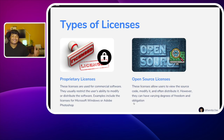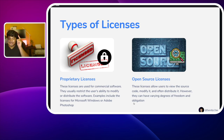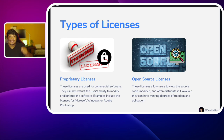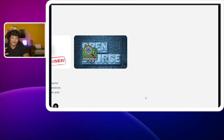Now let's understand the types of these licenses. Practically there are multiple types, but for our use case there are two kinds. The first is the proprietary license — used for commercial purposes only and restricts the user's ability to modify or distribute the software, for example Microsoft Windows or Adobe Photoshop. The second type is the open source license, which allows users to view the source code, modify it, and often distribute it, though they can have various degrees of freedom and obligation as per the license agreement.